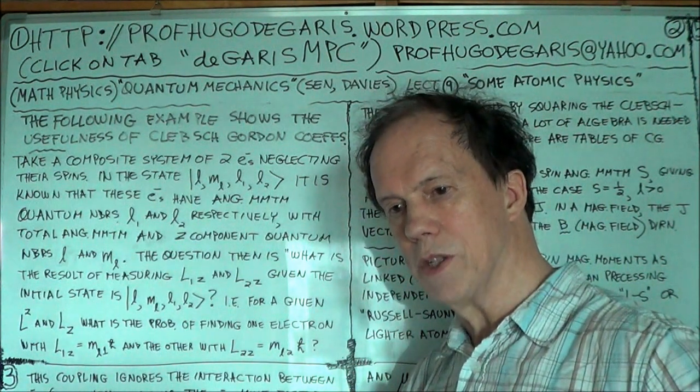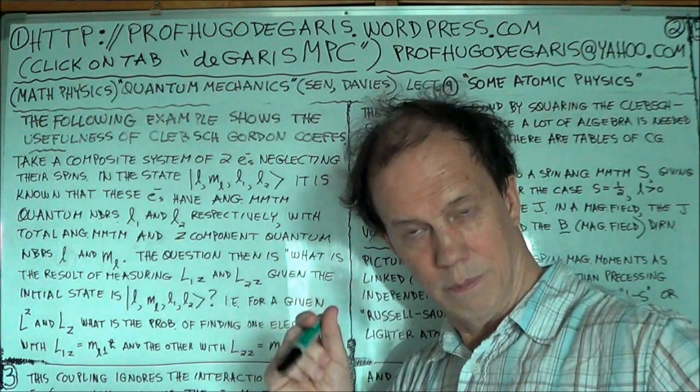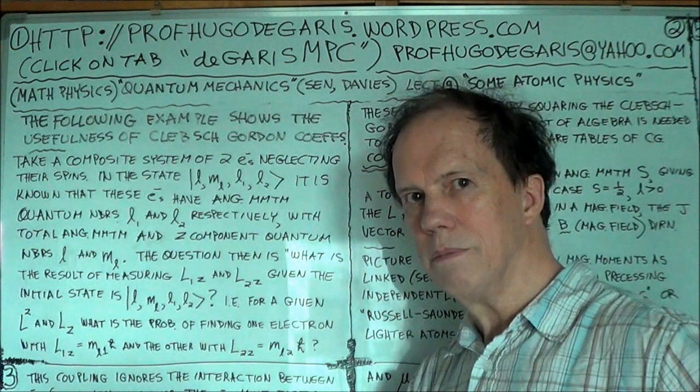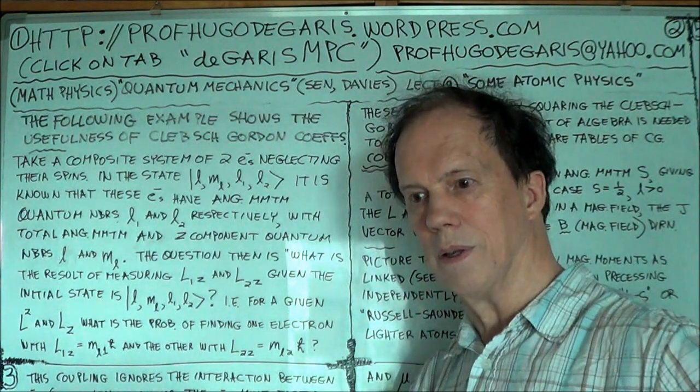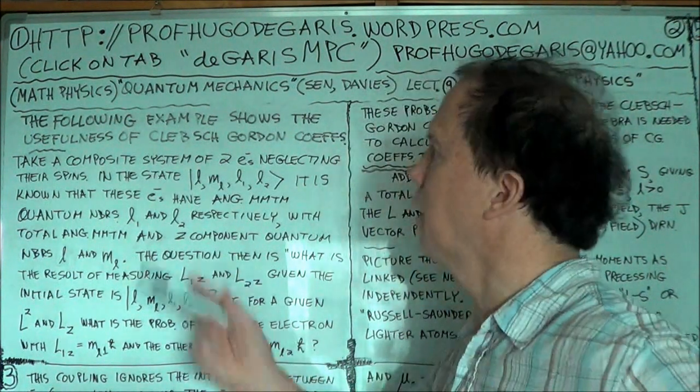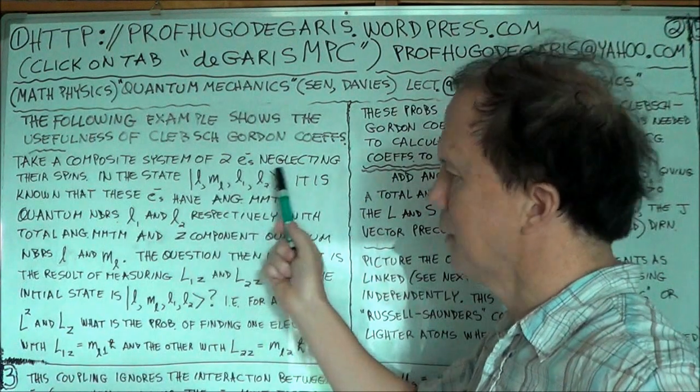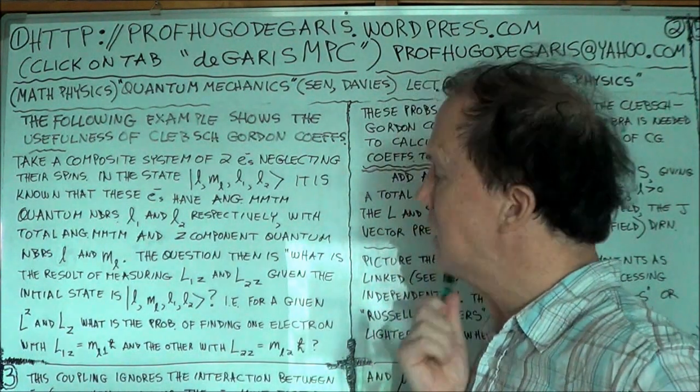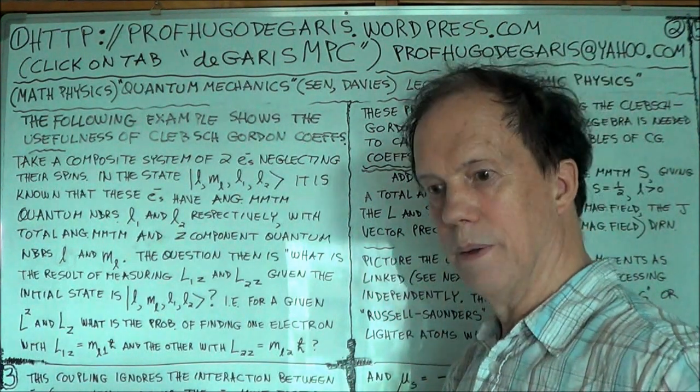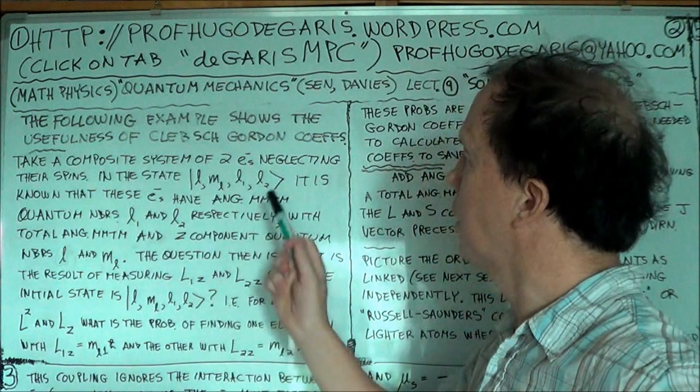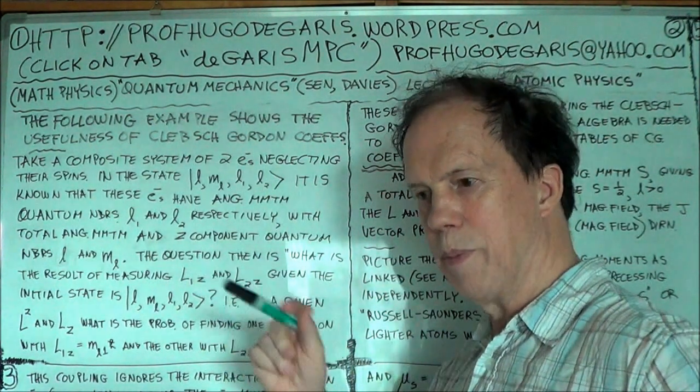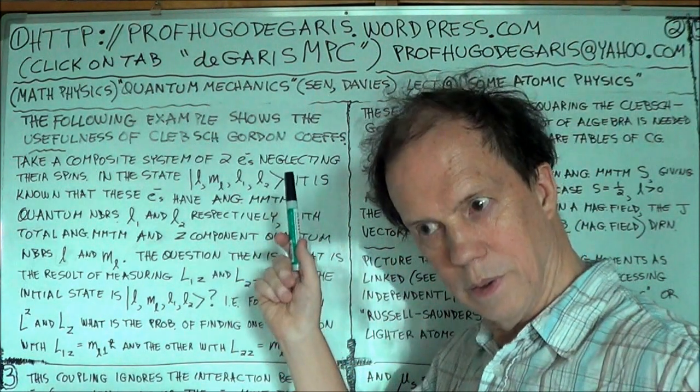Therefore, those coefficients when squared, well, the coefficients then, the Clebsch-Gordan coefficients, they are then interpreted as probability amplitudes, right? So if you square them, you get the probability, so like, if you're expanding this out, there's a weighted sum of, we're only talking in a meter.